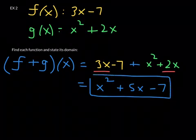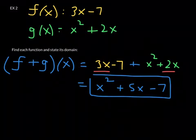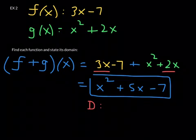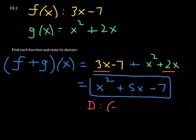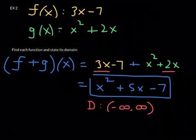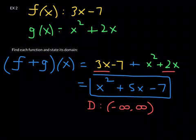3x plus 2x gives 5x, and then you have minus 7, so the sum function is x squared plus 5x minus 7. This is what you get when you take f and g and add them together. As for its domain — f plus g is a quadratic function. We studied quadratic functions in chapter 1 and learned that all quadratic functions have a domain of all real numbers, because the parabolas branch out indefinitely left and right, and any real number input will produce a real number output.